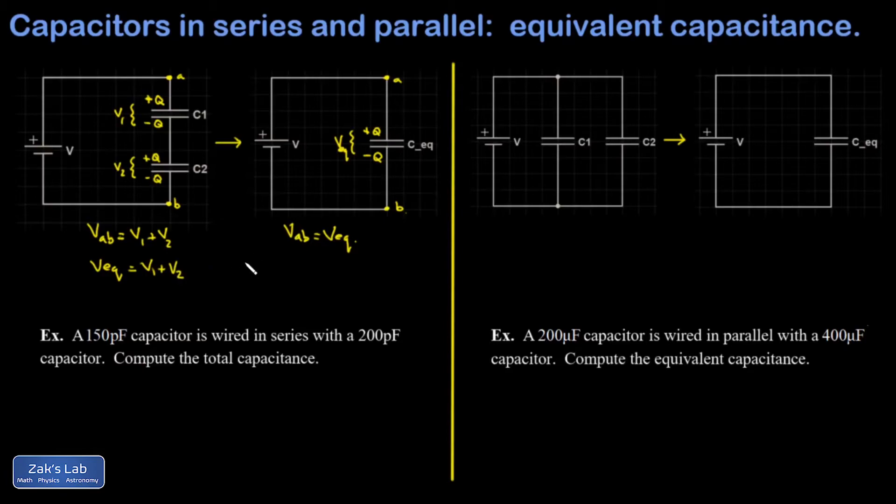Now just as a little side note, I can remind you of the definition of capacitance as charge per volt, and that means the potential difference across the capacitor is given by the charge on it divided by the capacitance. This allows us to take our voltage equation and express it in terms of the individual capacitances.